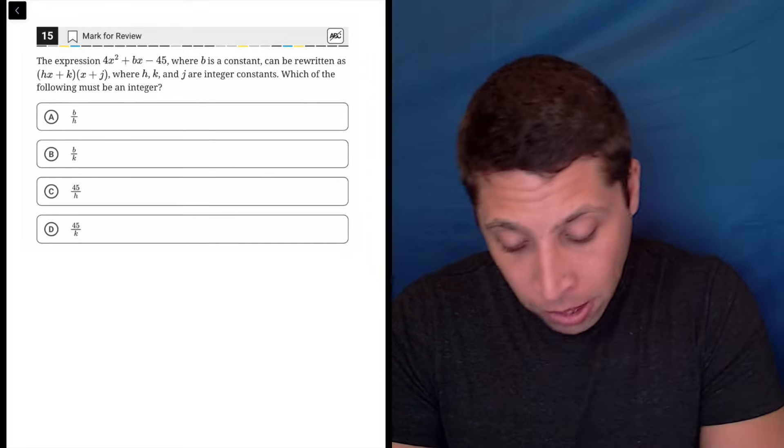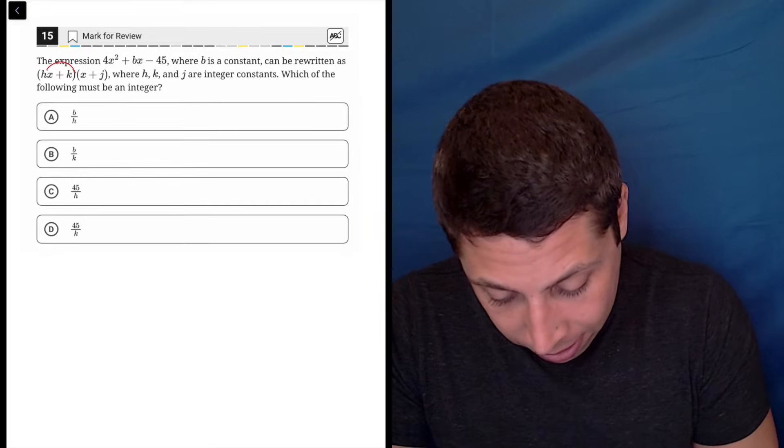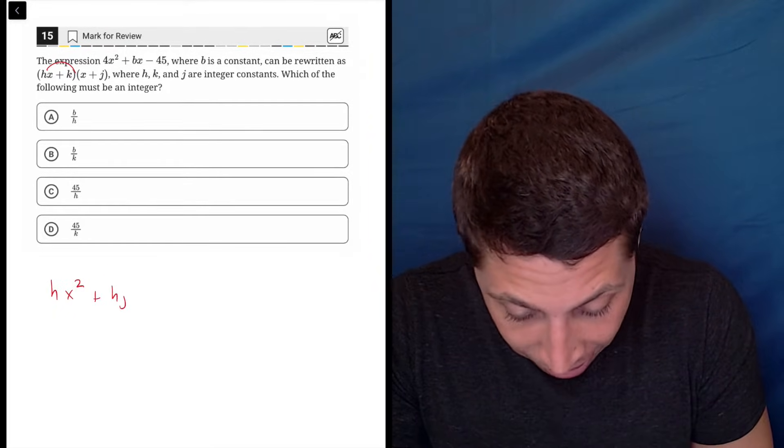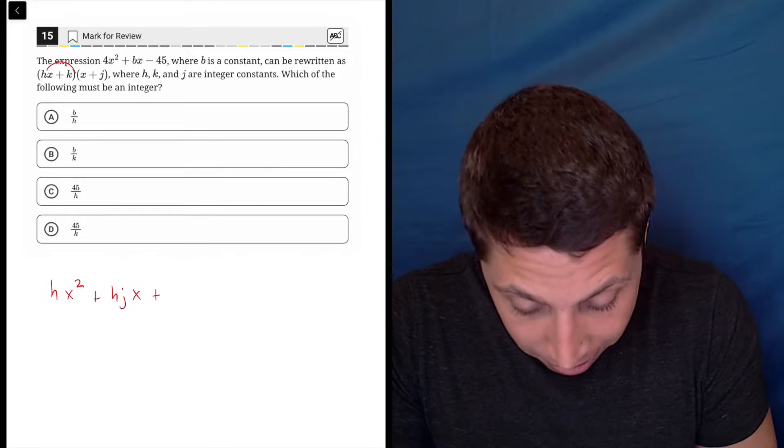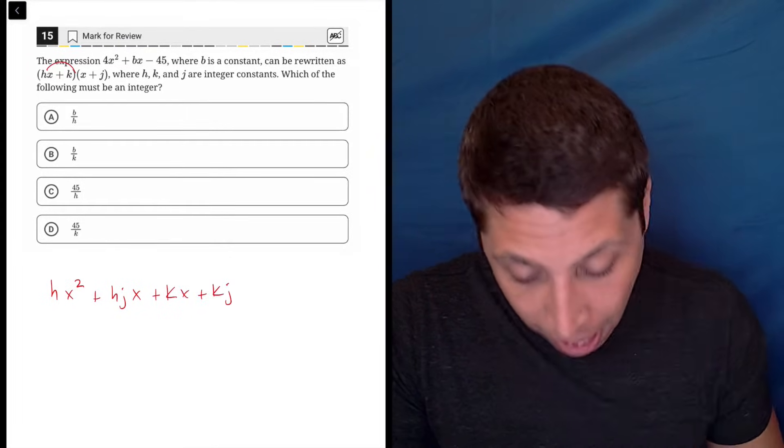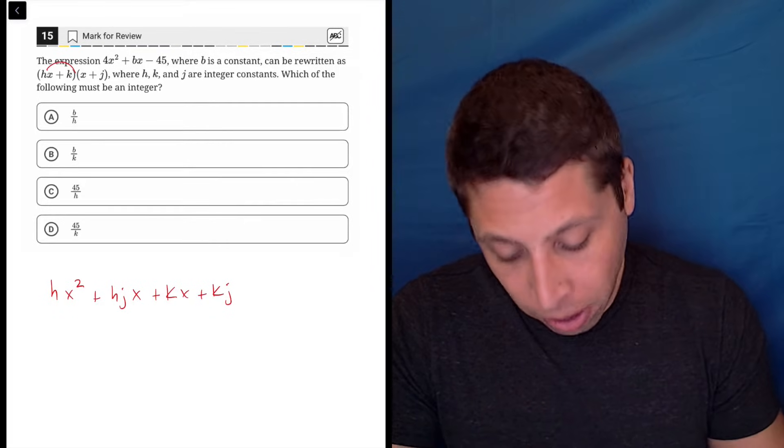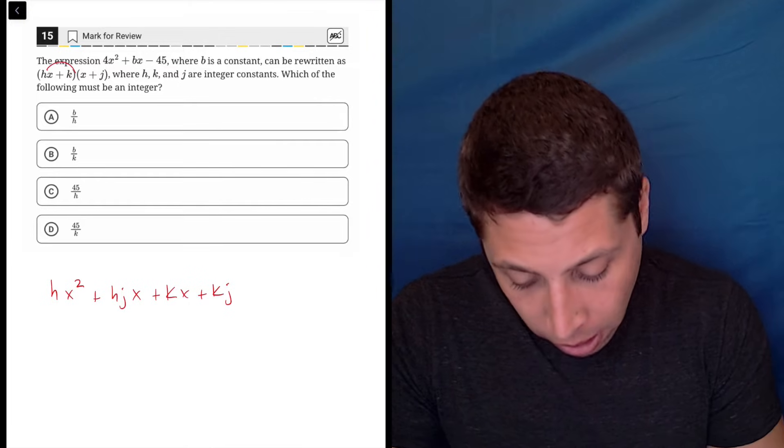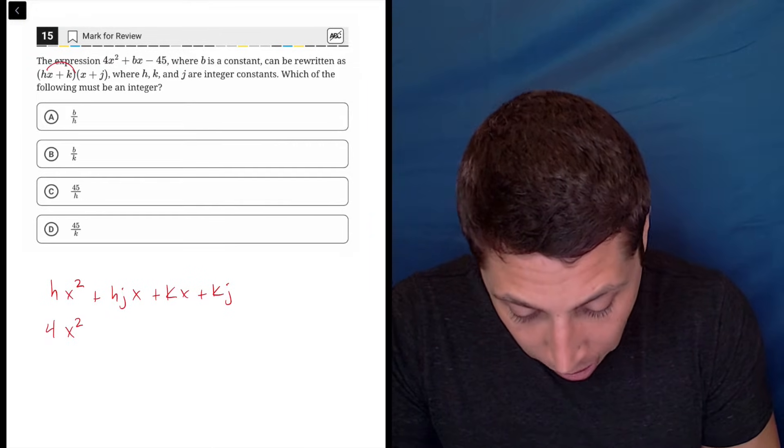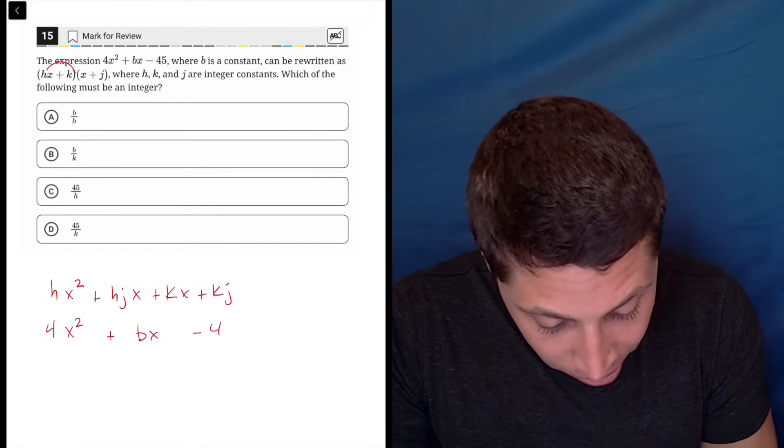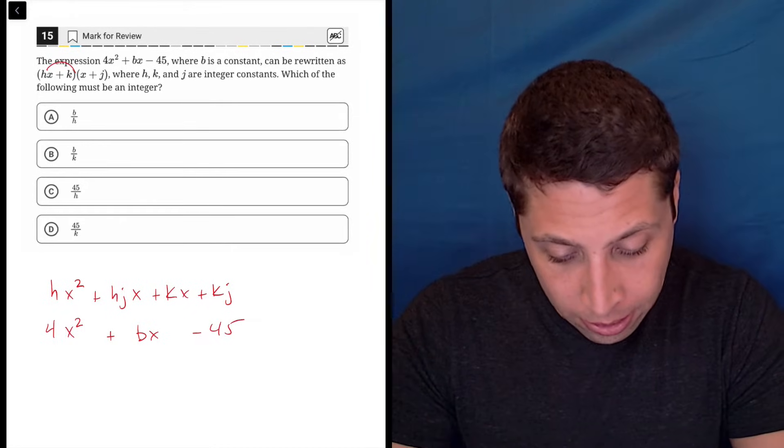That probably will help me. So, hx times x, that's hx² plus hjx plus kx plus kj, and that's equal to this other thing, but instead of writing it equals alongside, I'm going to write them on top of each other: 4x² plus bx minus 45.